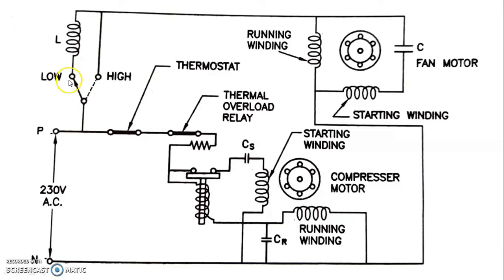In case of low speed selection, voltage is given through an inductor and some of the voltage drops across the inductor, so a reduced voltage is applied to the winding and speed will be slightly less. So we have two possibilities of selecting the speed.